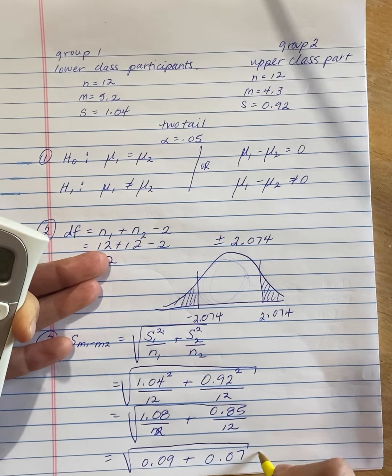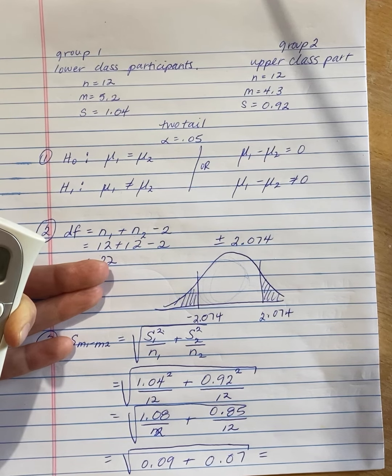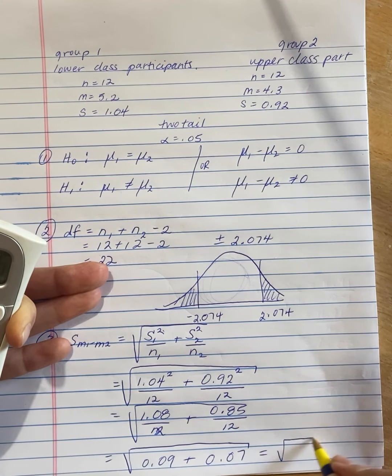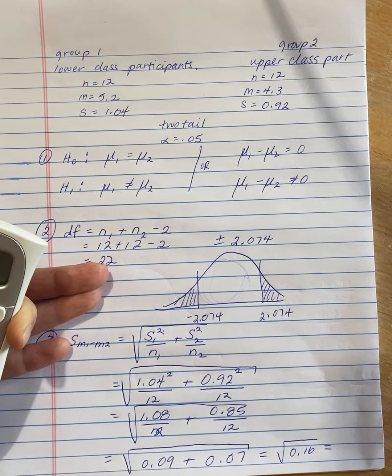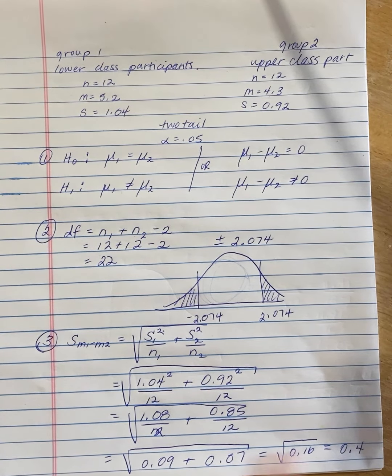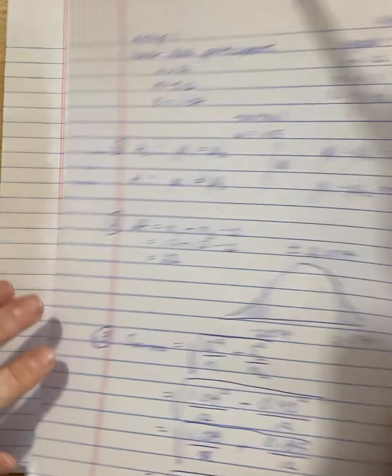So then that is 0.07 plus 0.09 is the square root of 0.16, which is 0.4. So that's our estimated standard error. We're not done yet, but that's a good start.